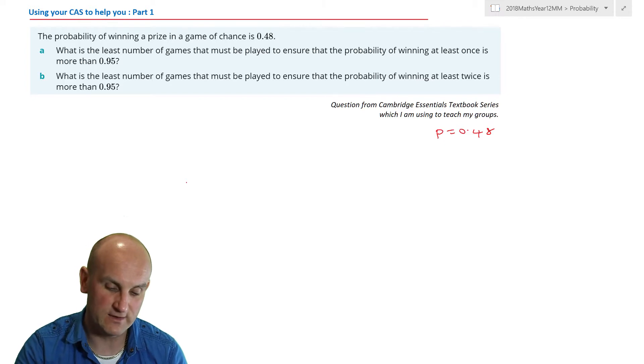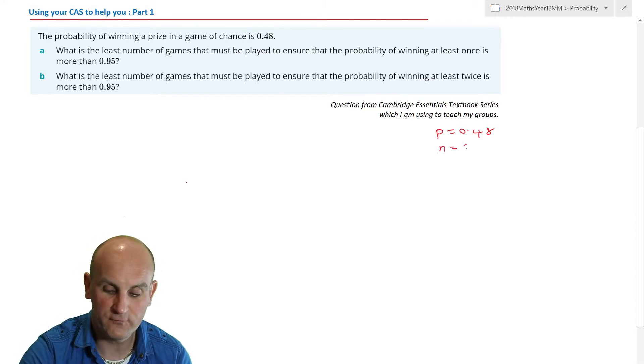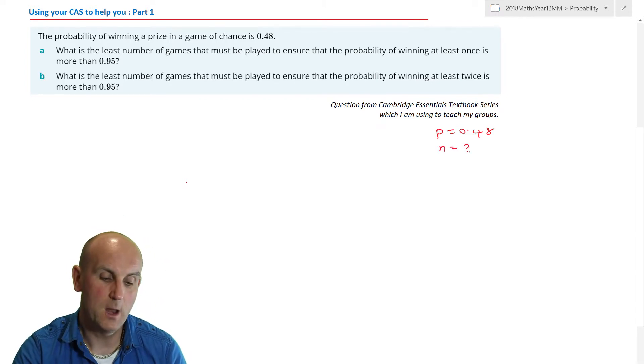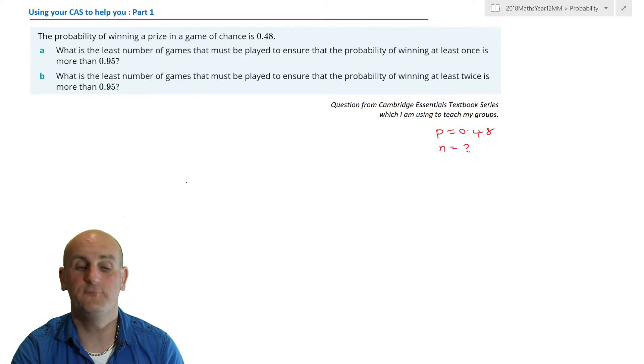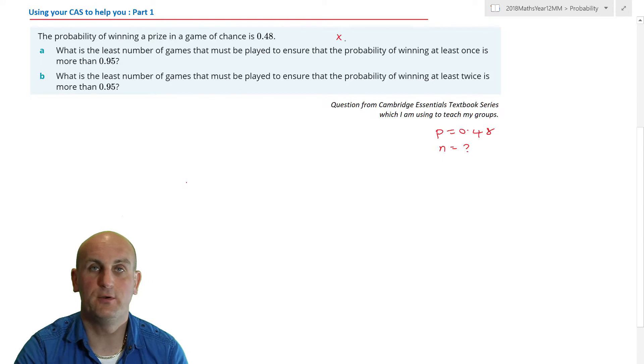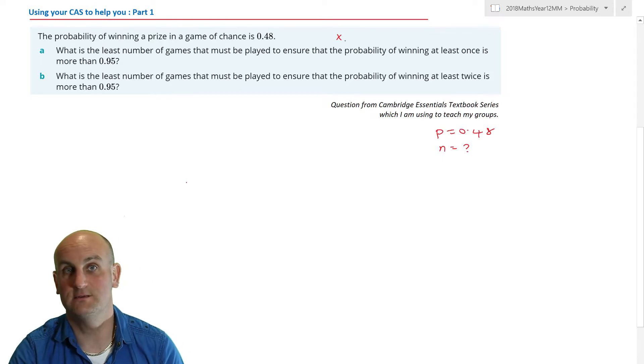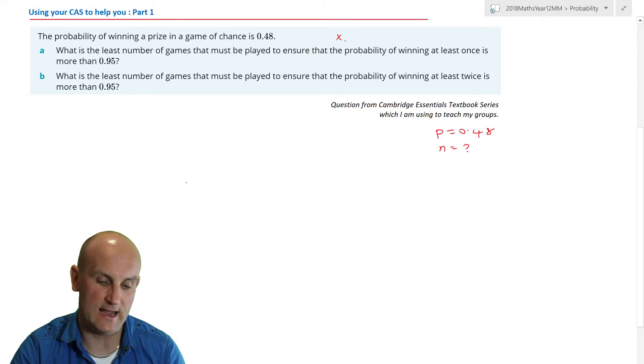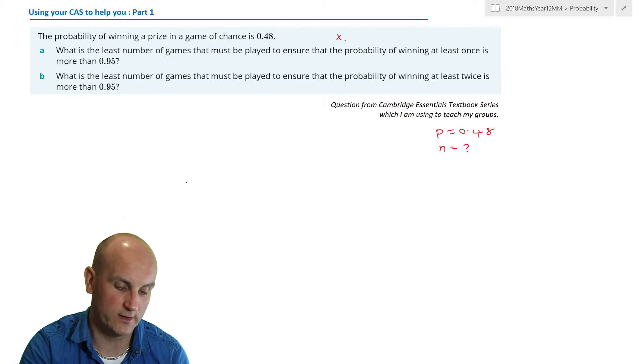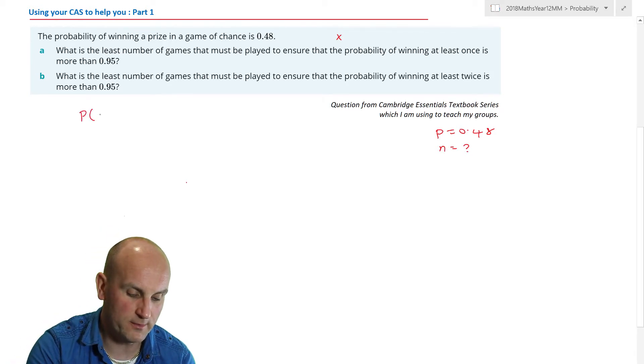The least number of games suggests to me that I'm trying to find my value of n. Must you play to ensure the probability of winning at least once? So we'll define x as the number of wins that are going to happen, and we want it to be at least once. So we're trying to find the probability that x is greater than or equal to 1 is greater than 0.95.